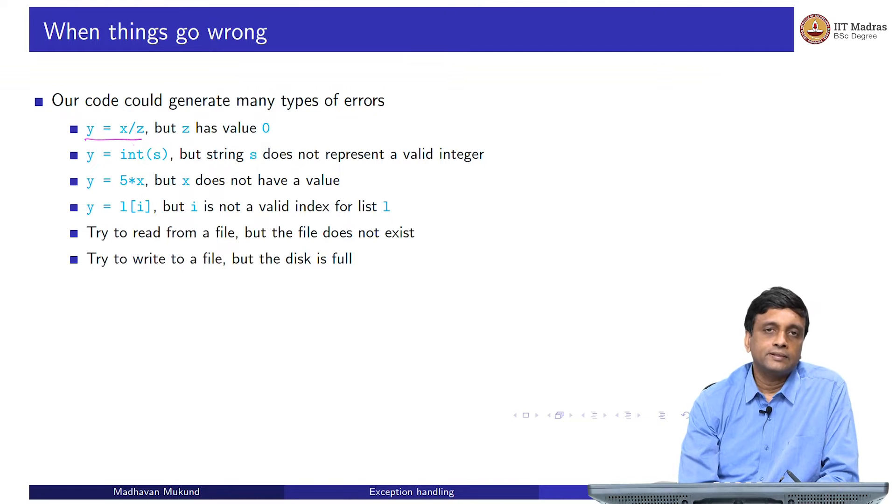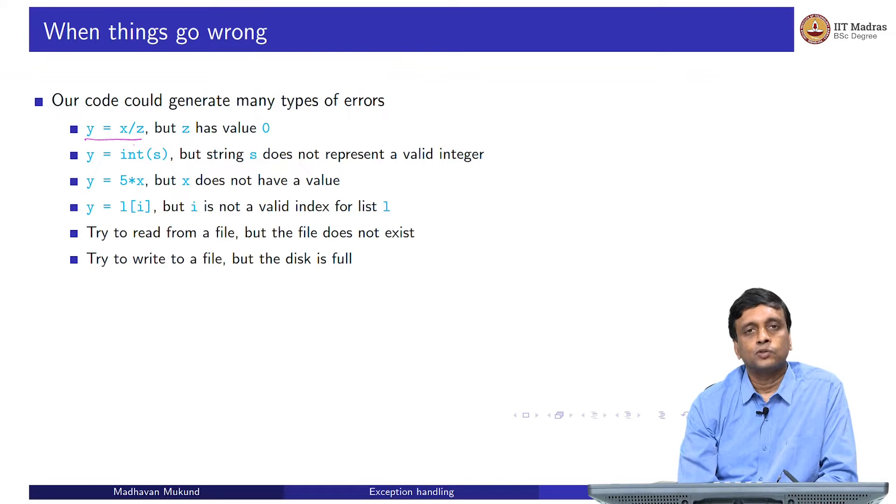Another type of error is that you actually use an uninitialized variable. You put an expression y equal to 5 times x, but so far you have not assigned a value to x. Or you have a complex structure like a list, and you are trying to access a position in the list, but the position you are trying to access is outside the bounds of the list. The list has positions from 0 to the length minus 1, and you are trying to access an i which is outside that. Similarly, you could be doing it for a dictionary also, you are trying to access a key from a dictionary, but that key does not exist.